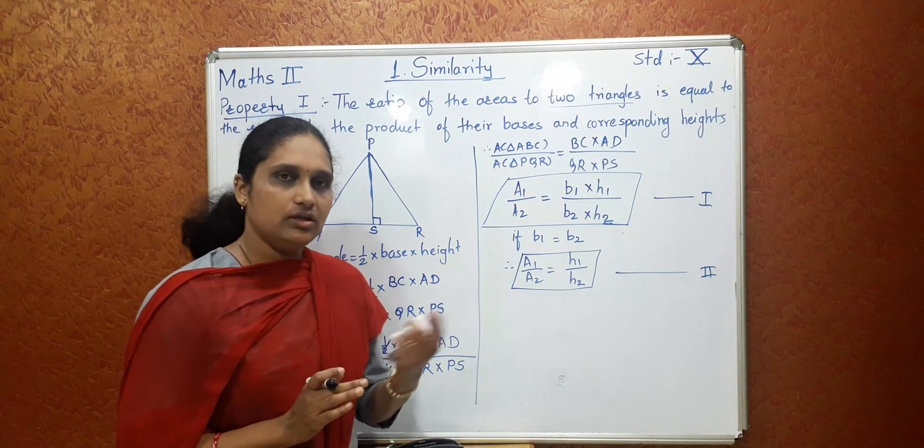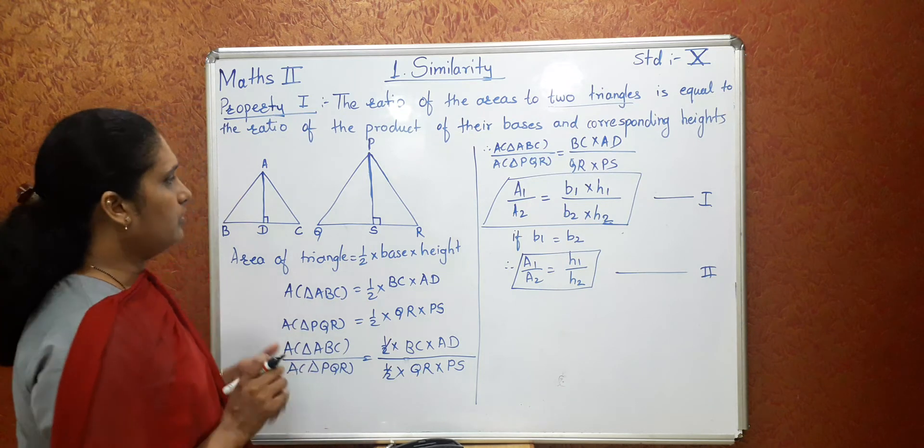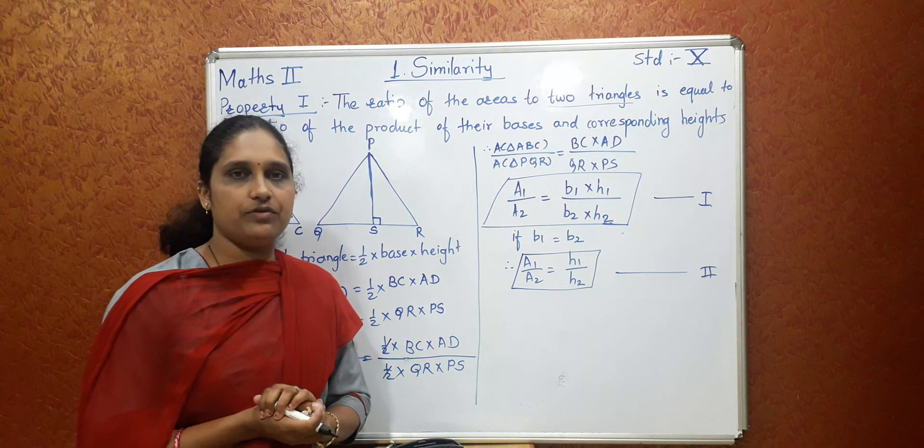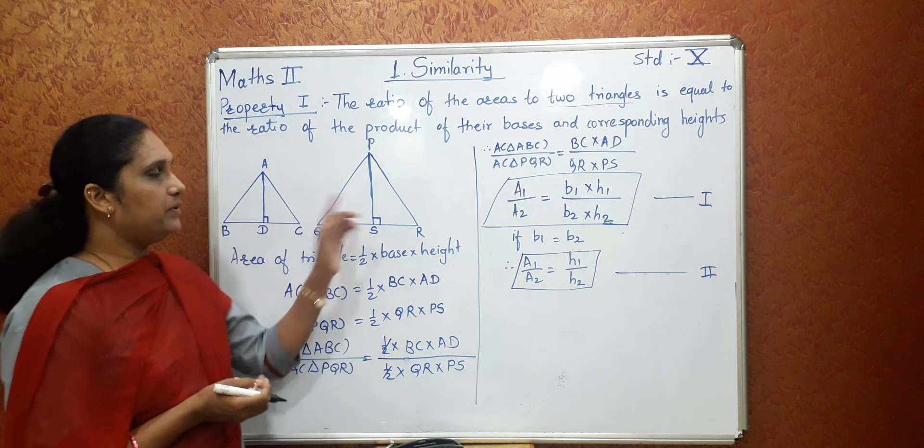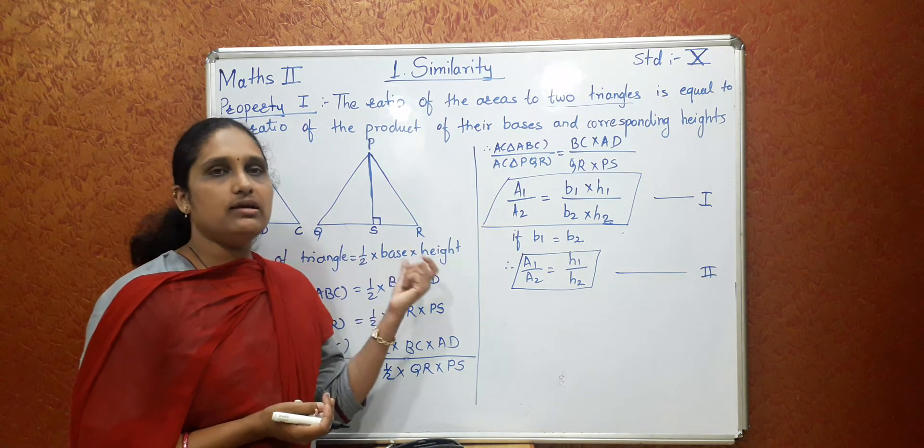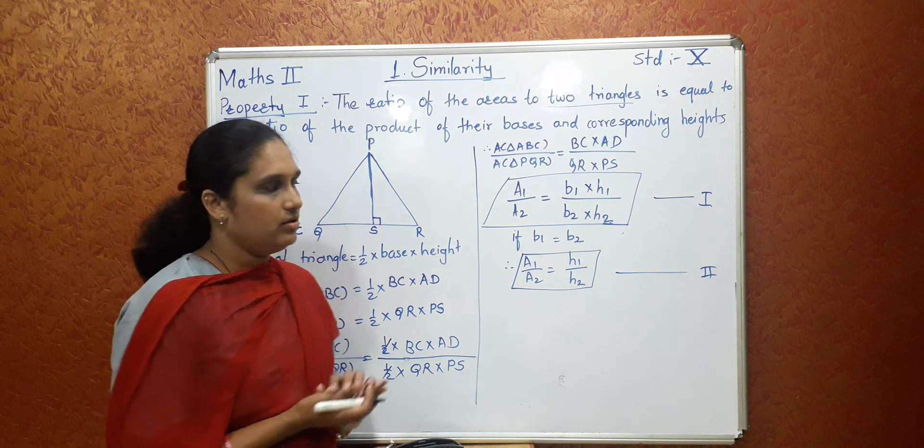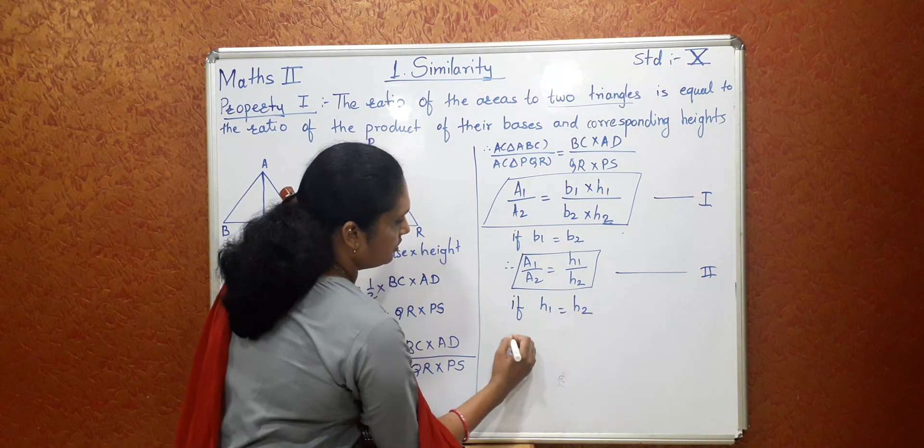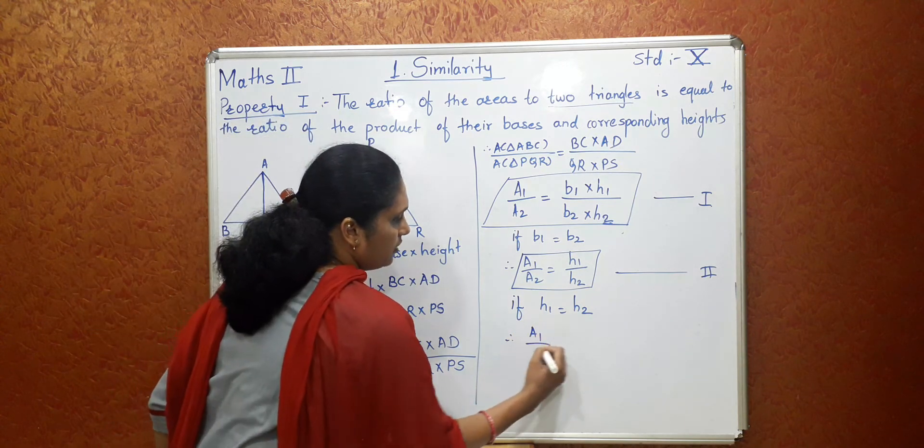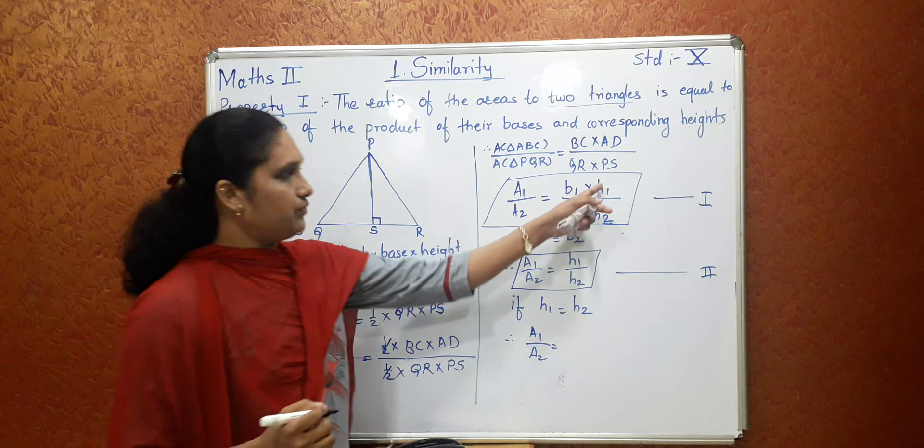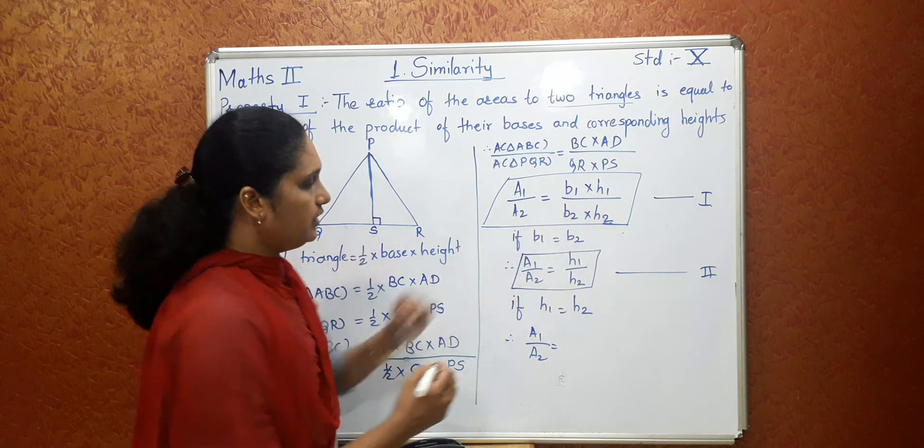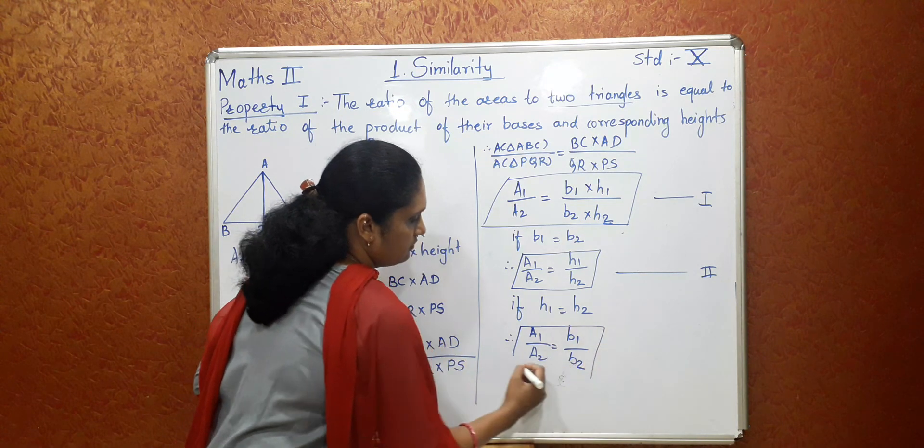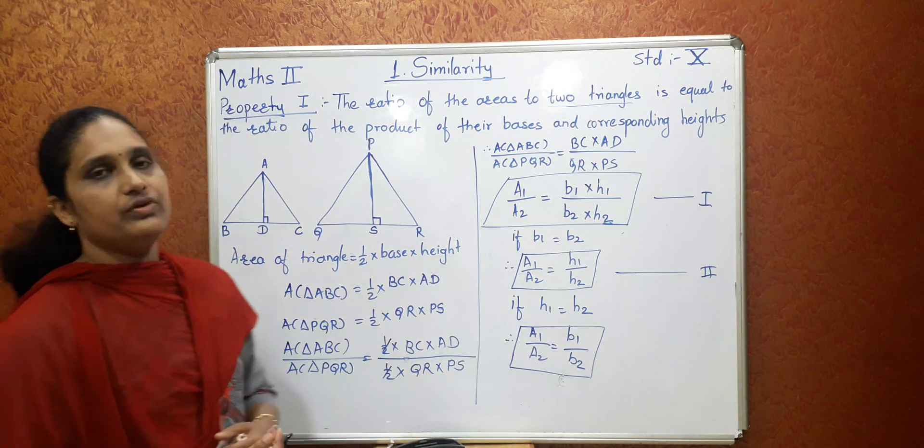Now on this, we can prove the third property also. So in that now, again, if you observe the figure here, AD and PS, both the heights are different. But suppose, if this AD and PS both are same, or the triangles are with equal height, then what will happen? See now, if H1 equal to H2, then A1 upon A2 equal to, H2 will get cancelled. And what will remain? B1 upon B2. So this is the third property of similarity.